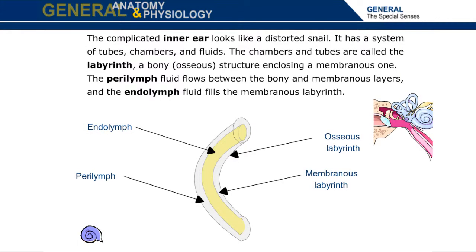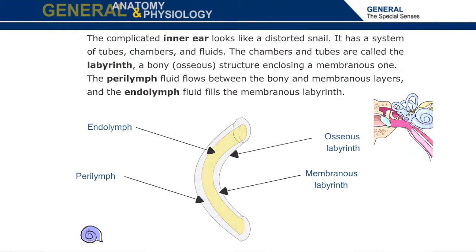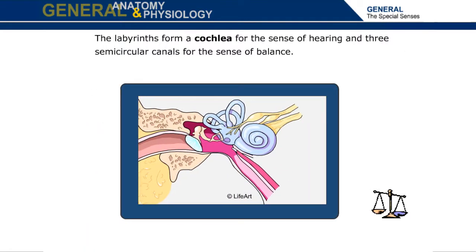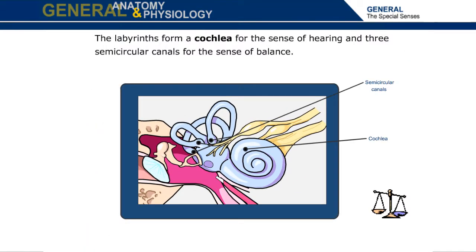The complicated inner ear looks like a distorted snail. It has a system of tubes, chambers, and fluids. The chambers and tubes are called the labyrinth, a bony structure enclosing a membranous one. The perilymph fluid flows between the bony and membranous layers, and the endolymph fluid fills the membranous labyrinth. The labyrinths form a cochlea for the sense of hearing and three semicircular canals for the sense of balance.